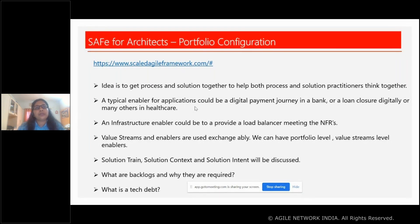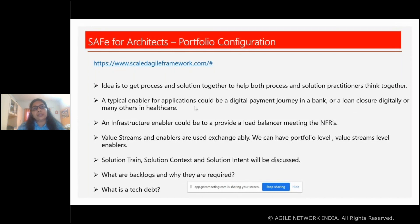Product owners keep looking at what additional enablers are required so that applications are not impacted and customer experience remains good. These enablers keep adding to value streams and are used interchangeably, as every value stream will have multiple enablers. A value stream can be considered like a business category — for a bank, typical value streams would be an account value stream or a payment value stream. In insurance, you'd have an insurance value stream, each with different epics and enablers.